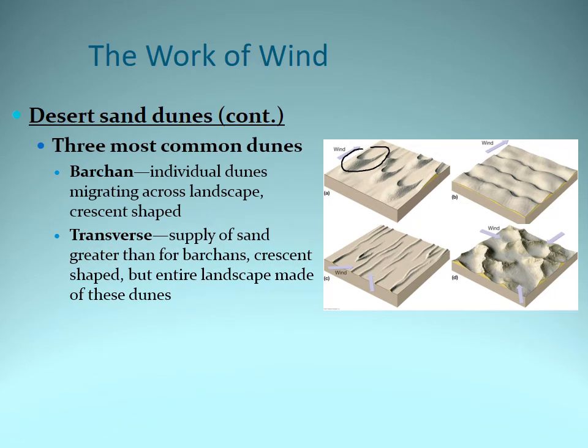Two, the transverse sand dune. Now we have a lot more sand, so instead of creating individual sand dunes, we create sort of a ripple effect. It kind of looks like waves in water on top. And again, we need one dominant wind direction.